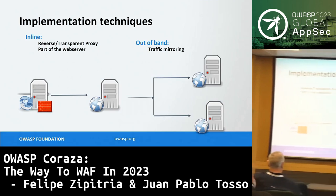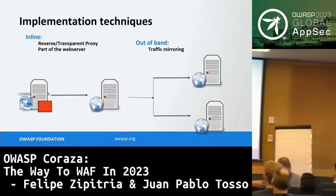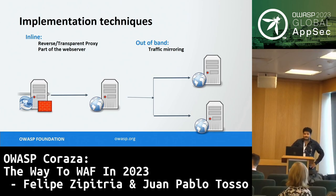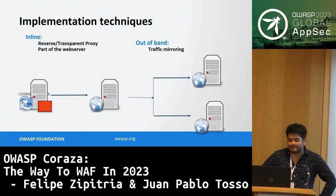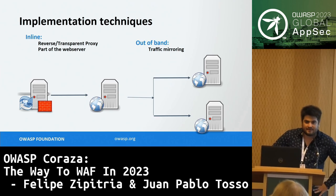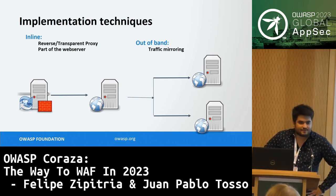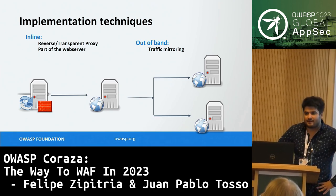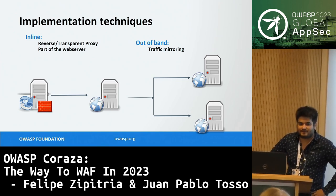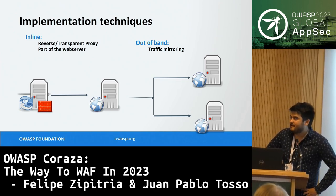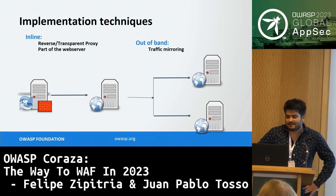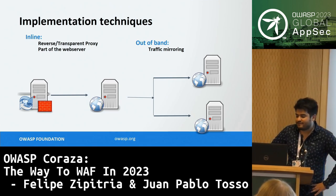Implementation techniques in the early 2000s were basically inline or out of band — we would have a reverse proxy, a transparent proxy, embed the firewall as part of the web server, or use traffic mirroring, which was the most common alternative at the time.